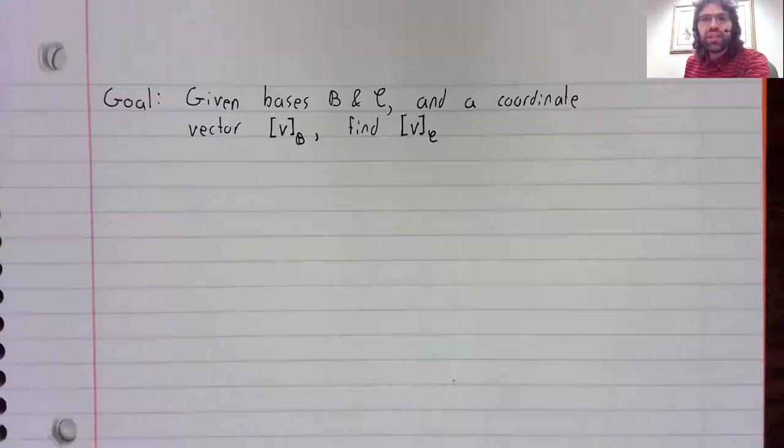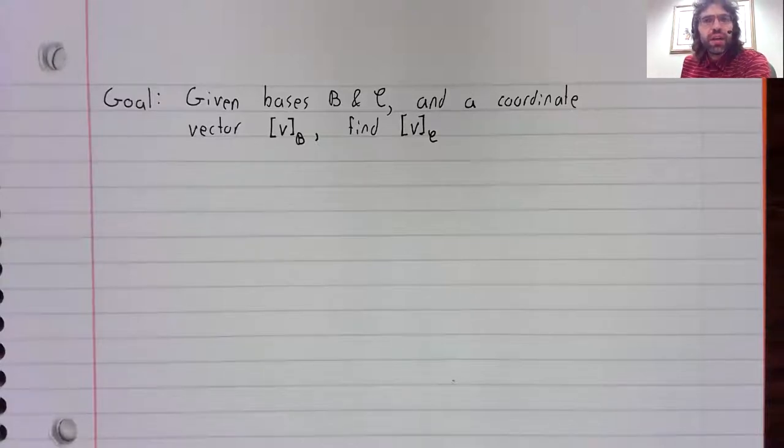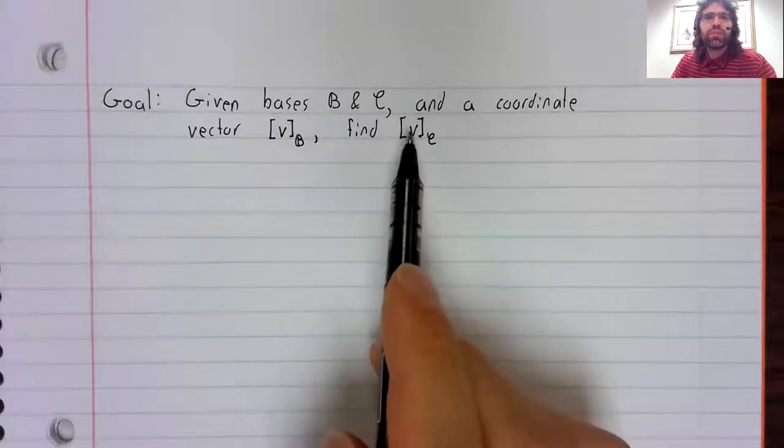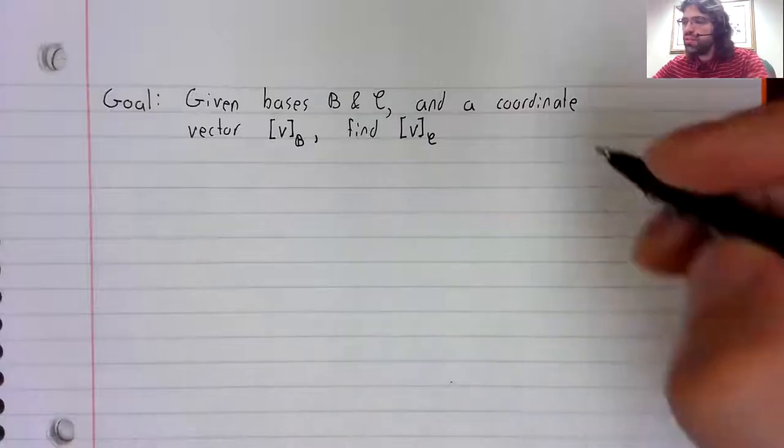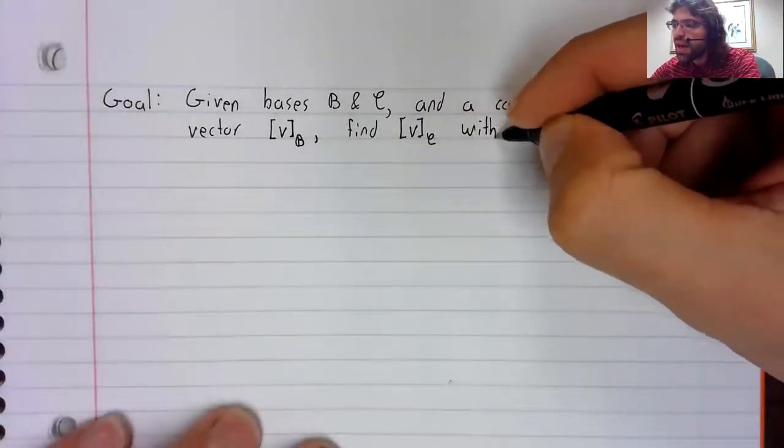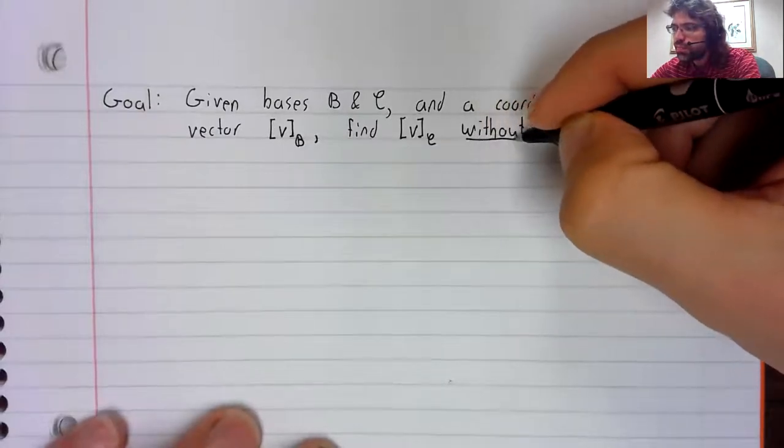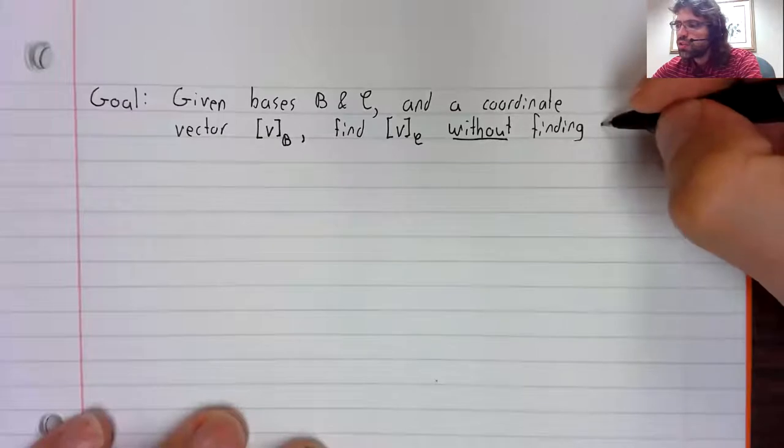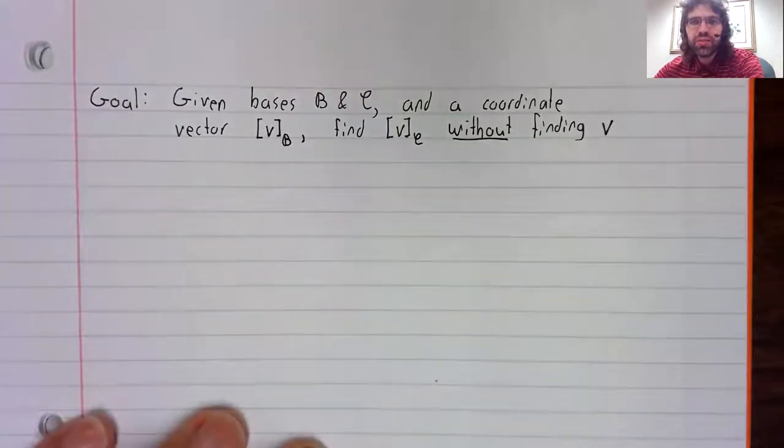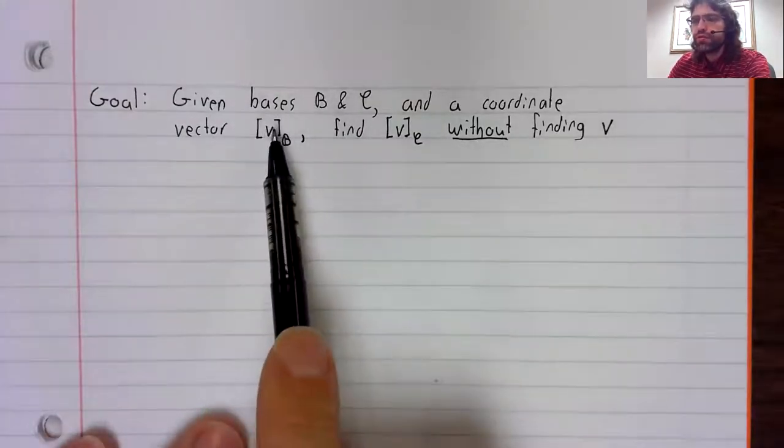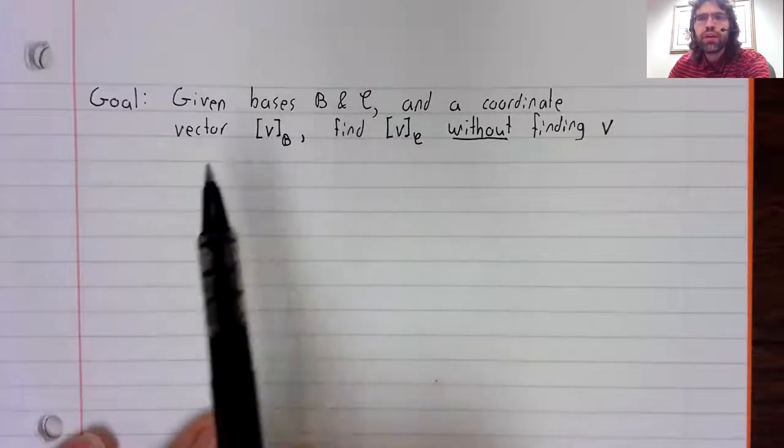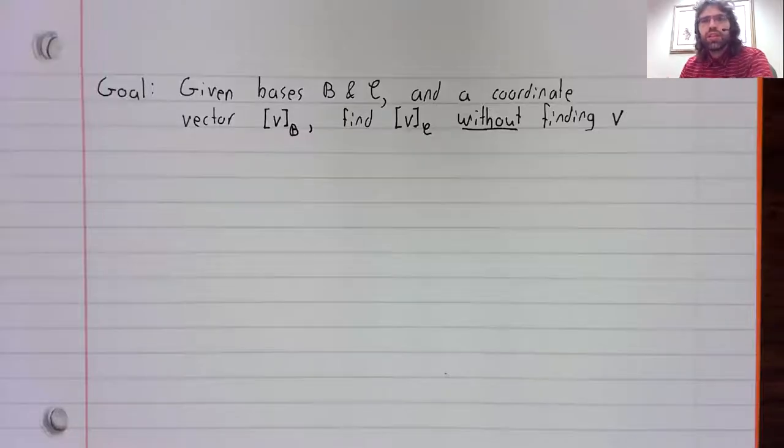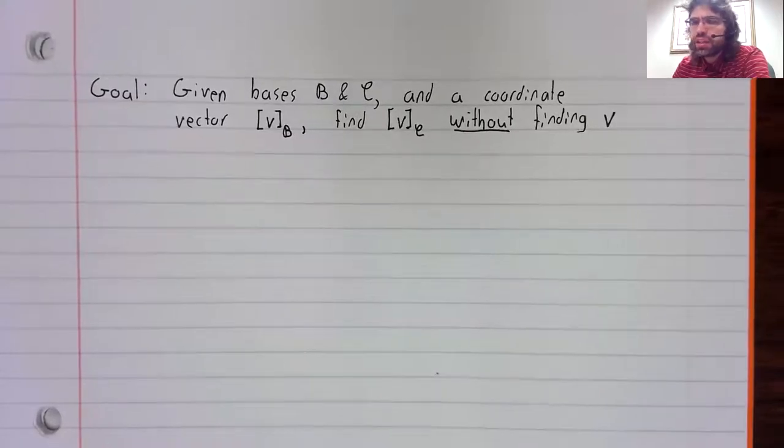So, given two bases B and C, and a coordinate vector for one of the bases, we'd like to find the coordinate vector with respect to the other base. Without finding what the vector V is, we want to go straight from here to here, without any intermediate steps. Let's investigate this question via example.